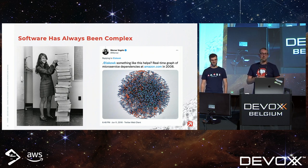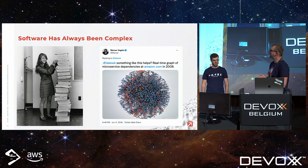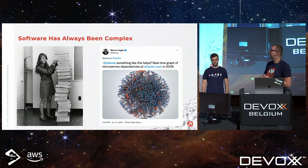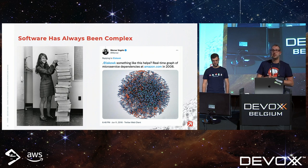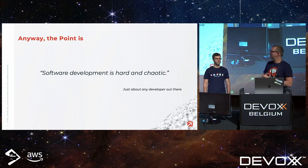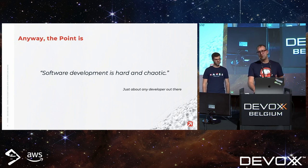We haven't become geniuses compared to programmers of the past — it's just different. One picture is of Margaret Hamilton next to the printed-out source code of the navigation panel of the Apollo program, already as tall as she is. On the right is a tweet from Amazon's CTO in 2008 showing the dependency graph of Amazon's services 14 years ago — imagine how it looks today. Everybody agrees software development is hard and chaotic.